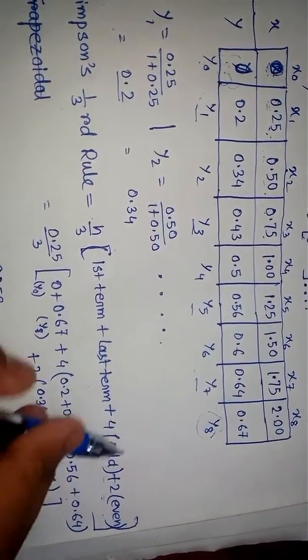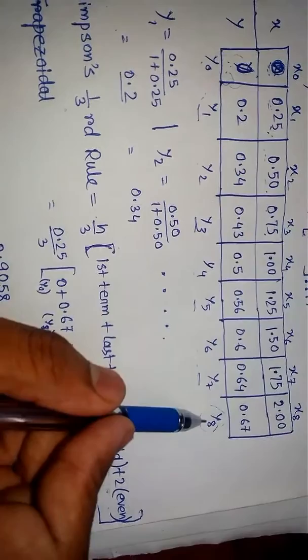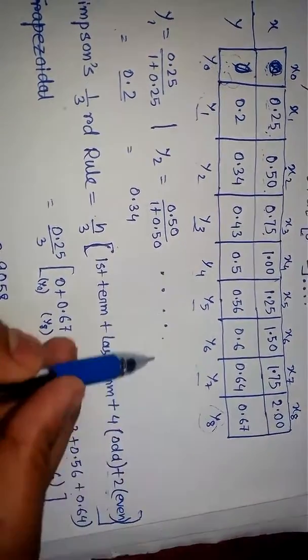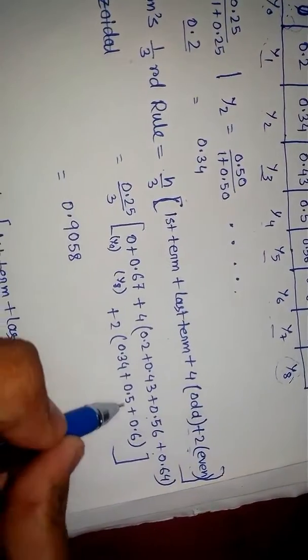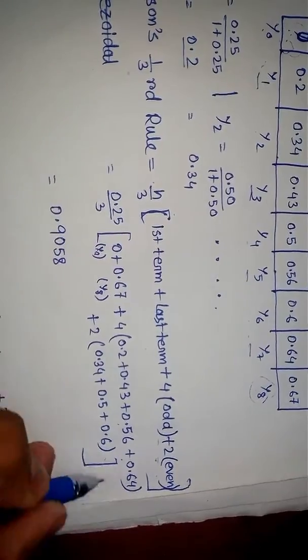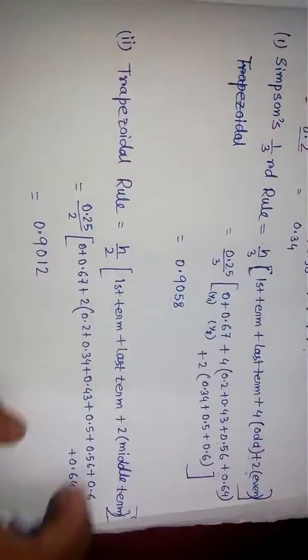Plus 2 into even terms. The rest of these are the even terms, except y₀ and y₈ because we have already taken those. We write it down in addition form, calculate the whole thing, and the answer comes out like this. You will calculate and get this answer too.